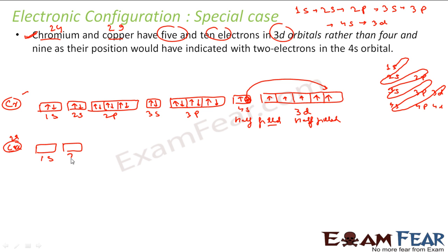Let's try it for copper. We have 1s, 2s, 2p, 3s, then 3p, then 4s, then 3d. And this 3d will have 5 orbitals. So let's take for copper with 29 electrons.